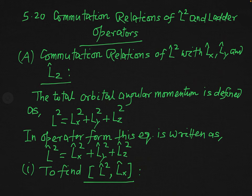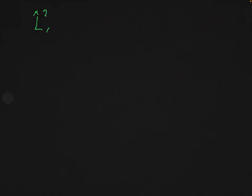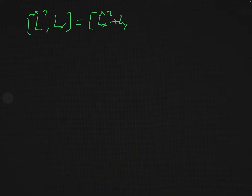Now we have to find the commutation relations of L-squared with all three components Lx, Ly, and Lz. Let us start by finding the commutation relations of the L-squared operator with its first component Lx. We write the commutator [L-hat-squared, Lx], and since L-hat-squared equals Lx-hat-squared plus Ly-hat-squared plus Lz-hat-squared, we expand as [Lx-hat-squared, Lx] plus [Ly-hat-squared, Lx] plus [Lz-hat-squared, Lx].